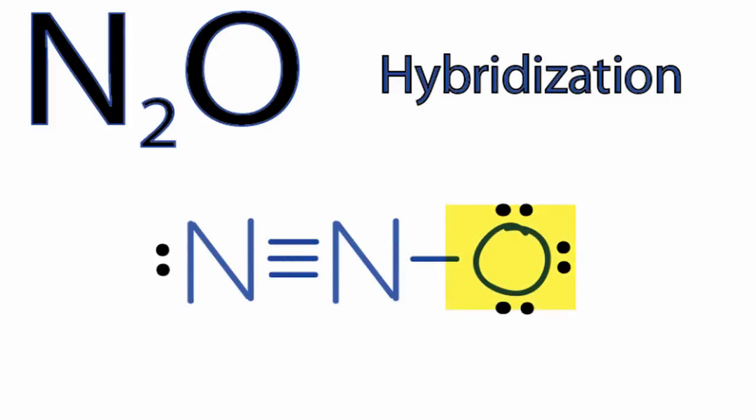Finally, on the oxygen, we have the sigma bond, and then we have one, two, three pairs of electrons, unbonded electrons. So we have a total of four things attached to that oxygen. That means we'll have an S and three Ps,